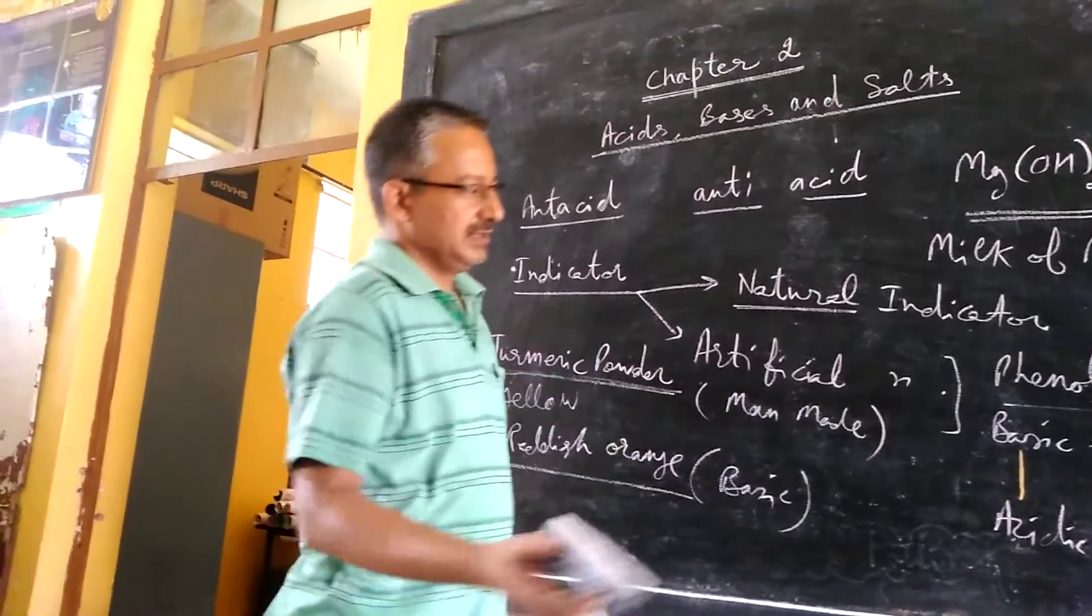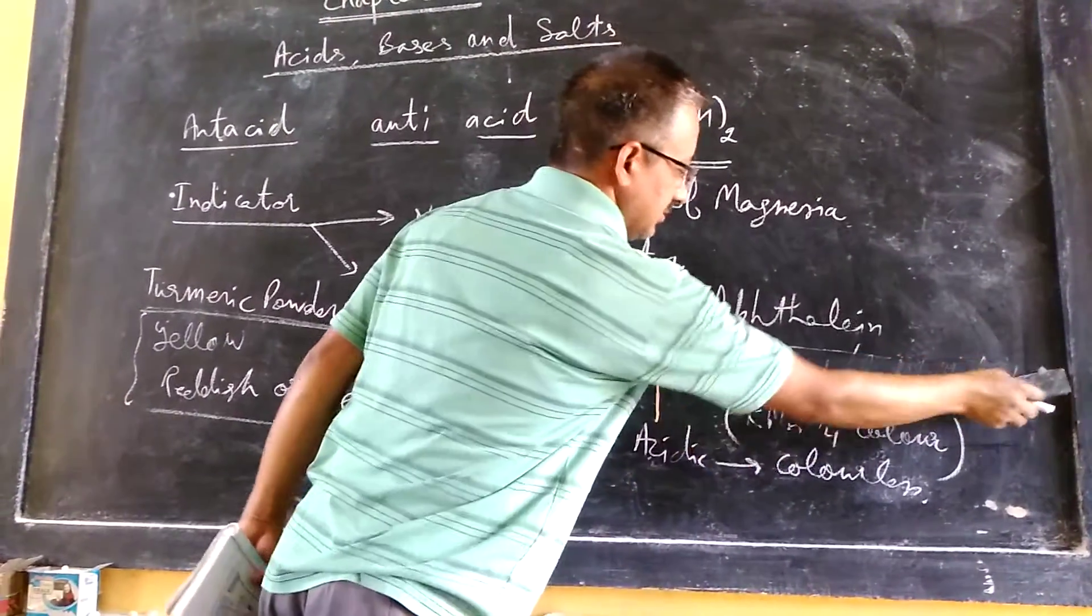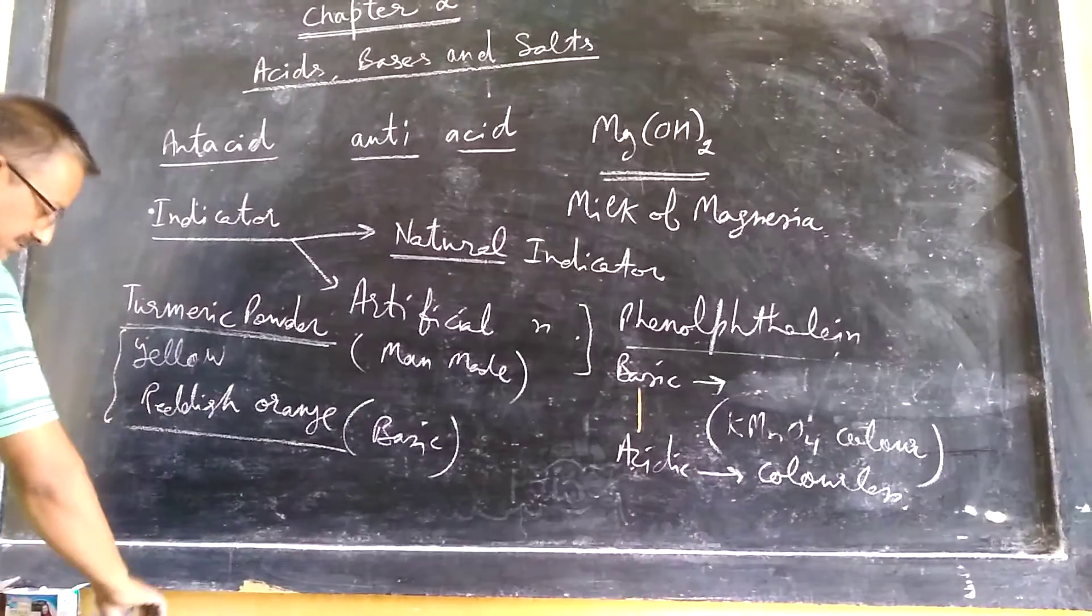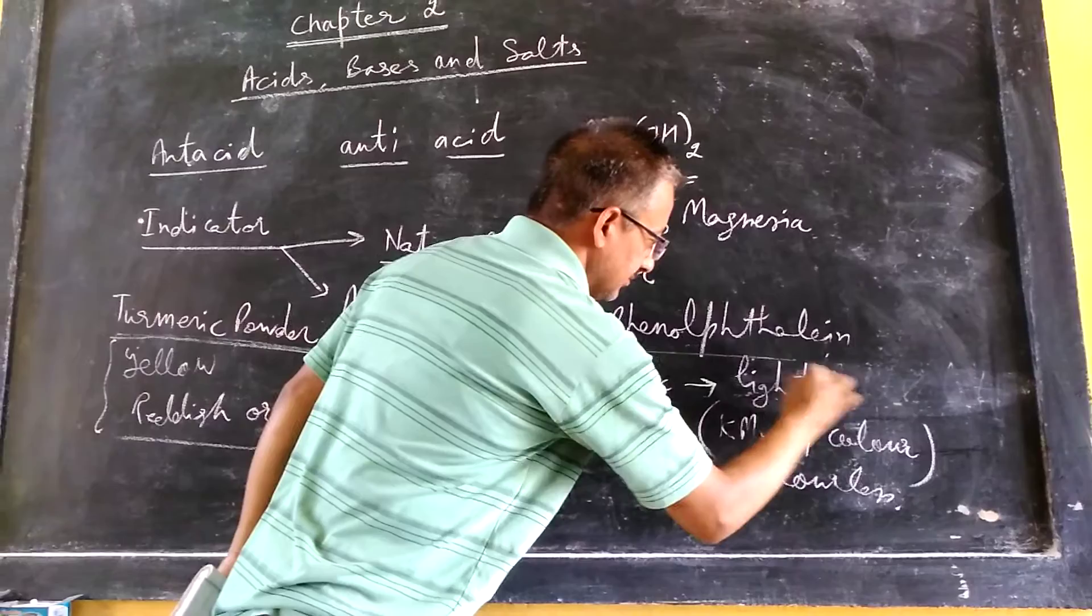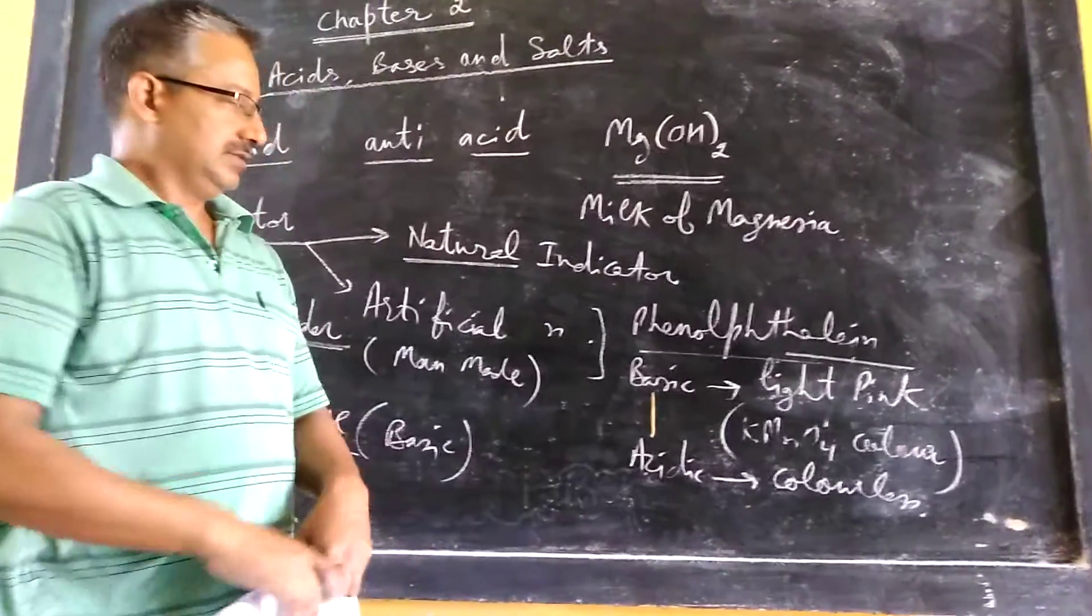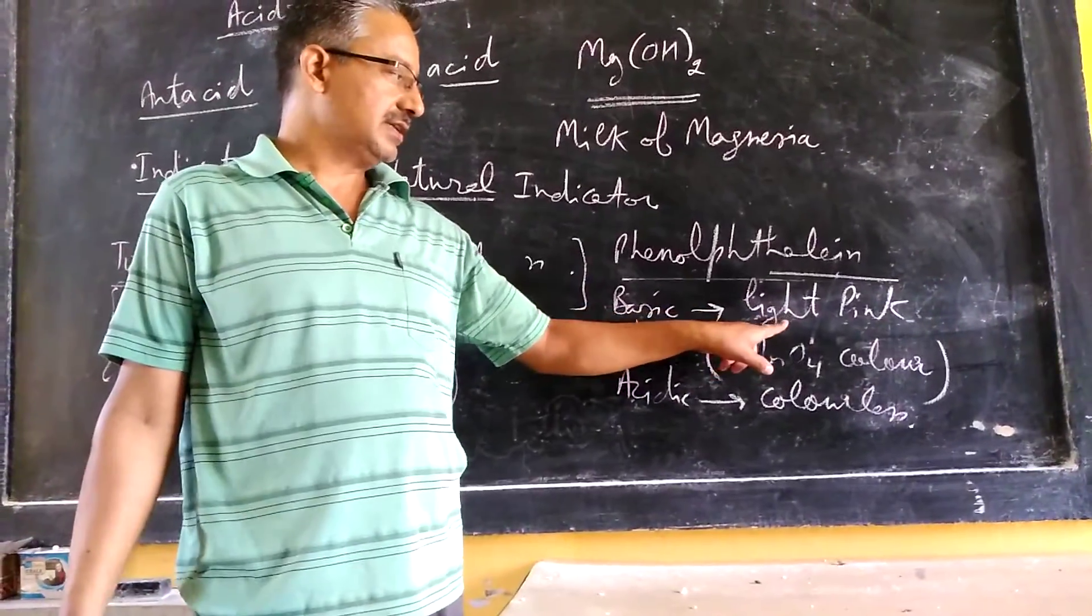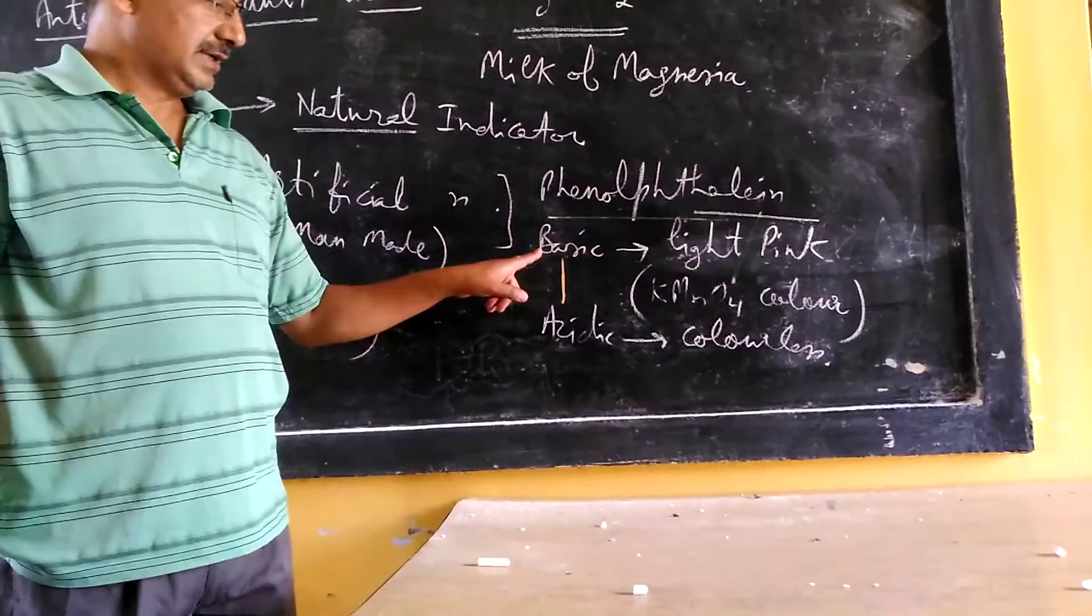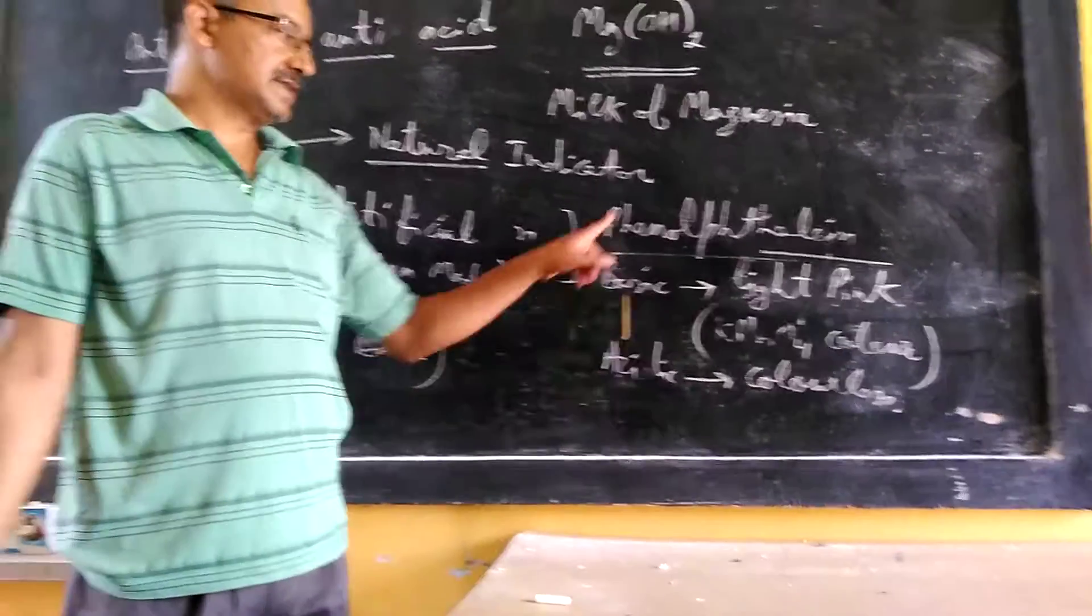Okay now see, this is red or light violet. These words are to be replaced by light pink. When we dissolve permanganate in water then its color is light pink. So phenolphthalein will give light pink color in basic medium, and it will be colorless in acidic medium.